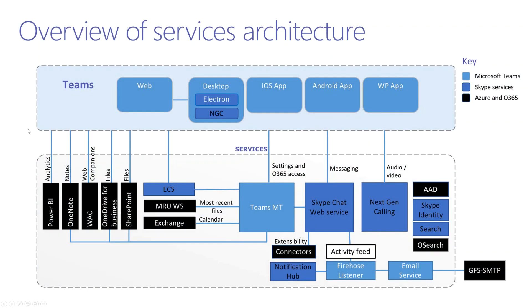This is the technical architecture of Microsoft Teams. It really uses a number of foundational components in Office 365 and surfaces those up into the Teams experience. When you're sharing files with other people in the chat, that's using OneDrive for Business under the hood. When you have the Files tab inside Teams, that's actually using a SharePoint document library. The messaging inside Teams is using Skype under the hood.